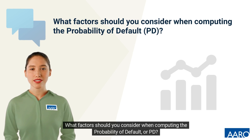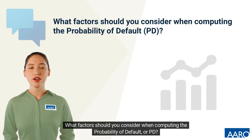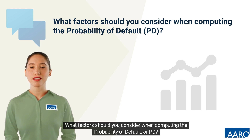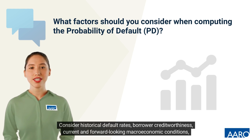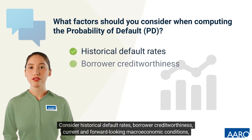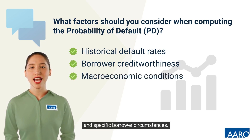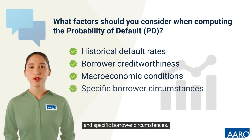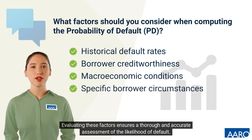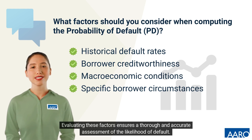What factors should you consider when computing the probability of default, or PD? Consider historical default rates, borrower creditworthiness, current and forward-looking macroeconomic conditions, and specific borrower circumstances. Evaluating these factors ensures a thorough and accurate assessment of the likelihood of default.